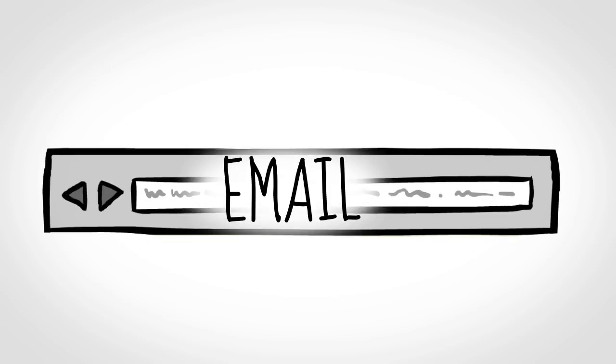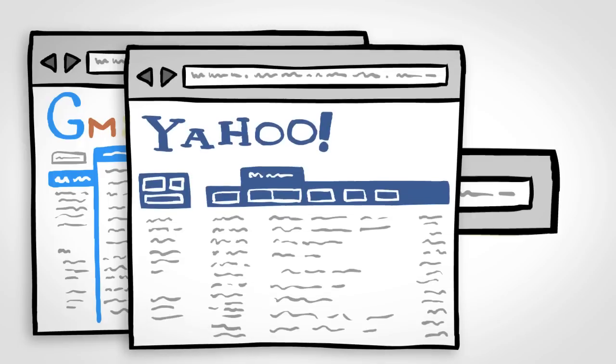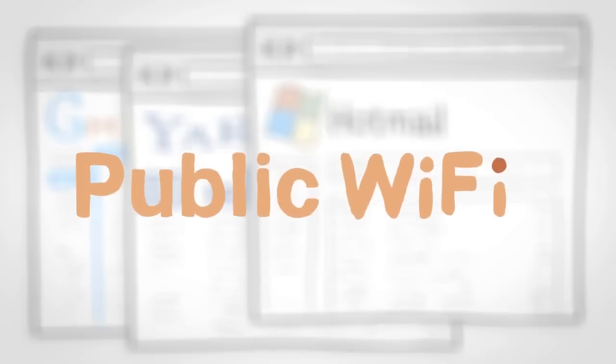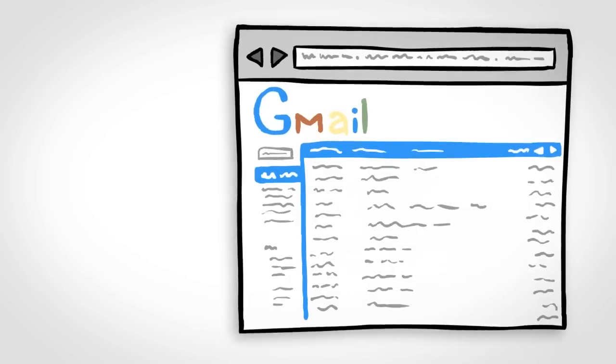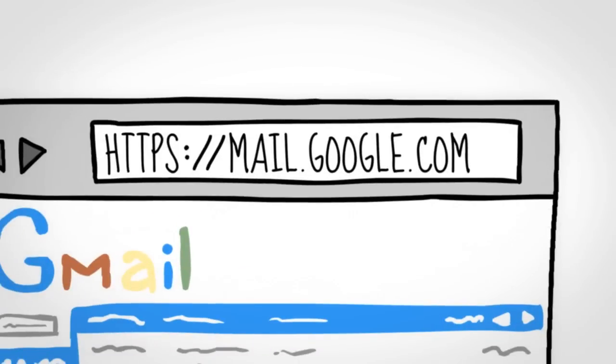First, use email services that run in a web browser, such as Gmail, Yahoo Mail, or Hotmail, when you're on an open WiFi network. These services use encryption. You can make sure it's on by looking at the address bar in your web browser. It displays HTTPS before the web address.